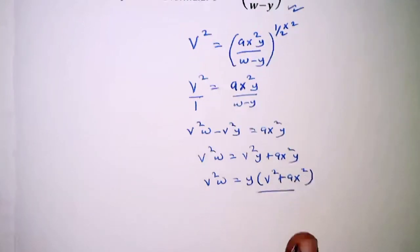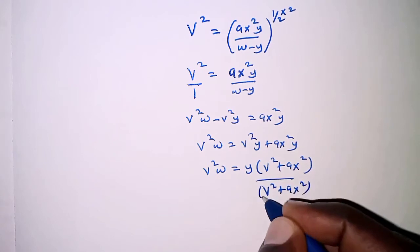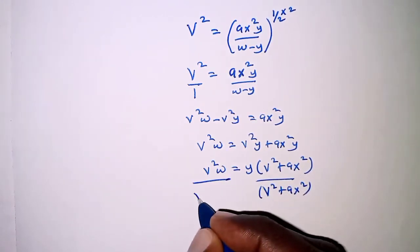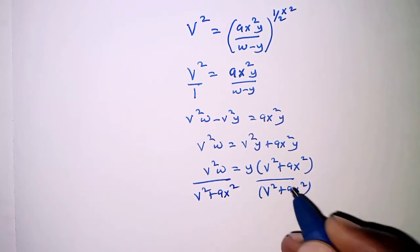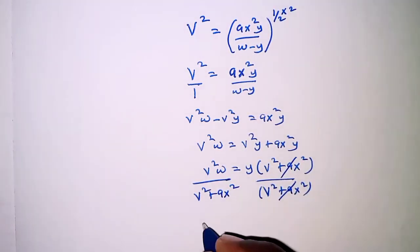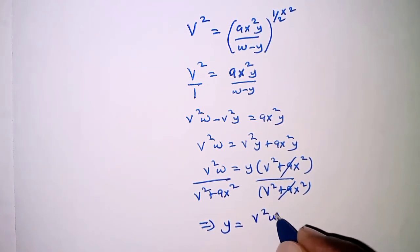...we are going to have V squared plus ax squared canceling, and that means Y is V squared W all over V squared plus ax squared.